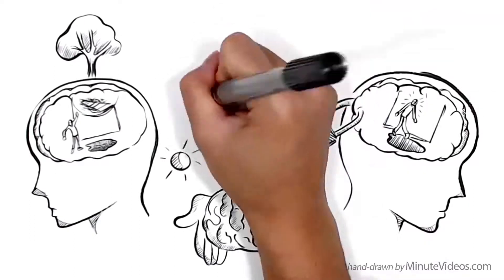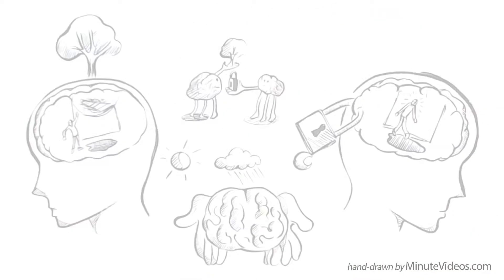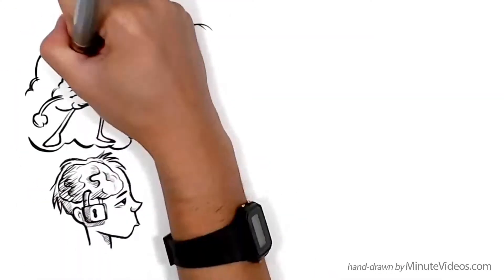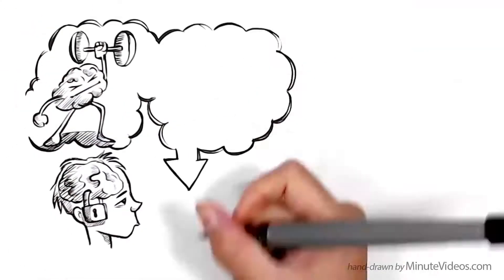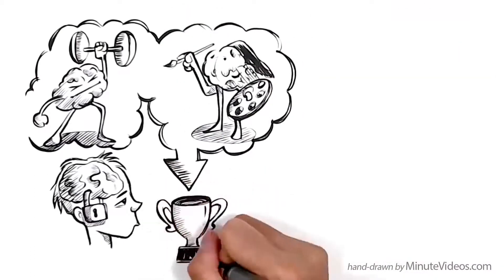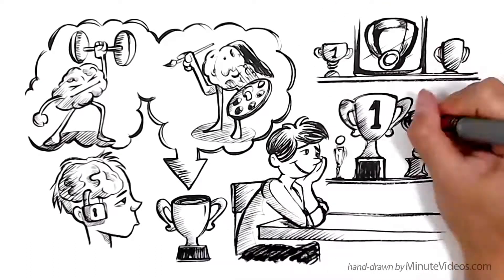Sometimes we like to switch from one to the other. People have a fixed mindset because they believe that basic qualities, like intelligence or talents, are fixed traits, and that these traits are responsible for success. They often like to document past achievements.